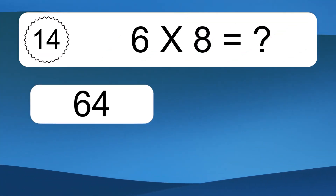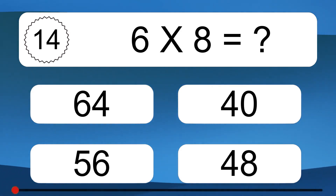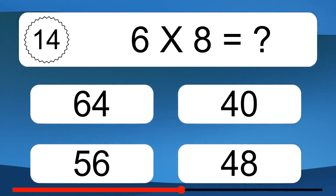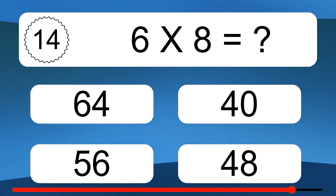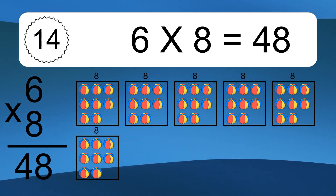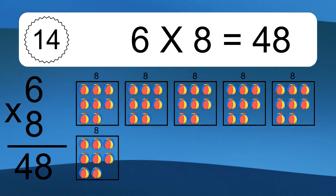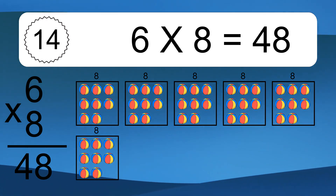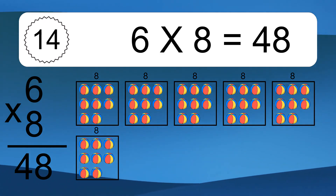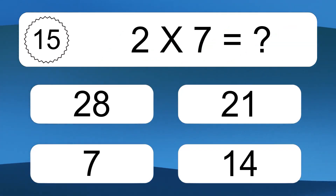6 times 8 equals what? 6 times 8 equals 48. We have 6 boxes and each box has 8 colorful balls inside. If you count all the balls in all the boxes together, you will have 6 times 8 balls. This equals 48 balls.